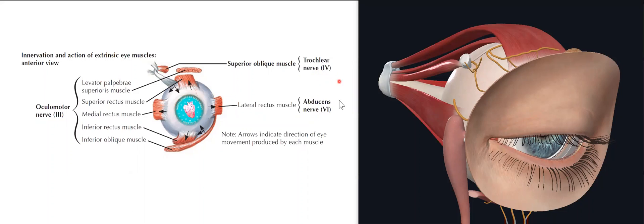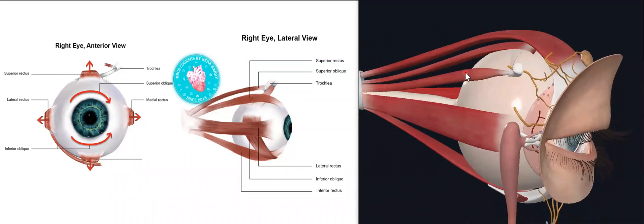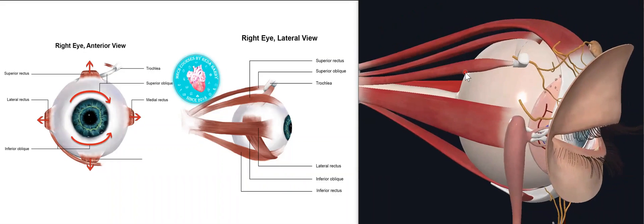The trochlear is the fourth cranial nerve and the abducens is the sixth cranial nerve. Regarding intorsion and extorsion: the superior oblique does intorsion, which is a clockwise movement of the eyeball. The medial rectus does adduction towards the nose and the lateral rectus does abduction.